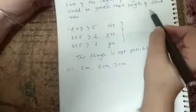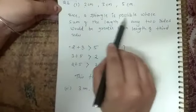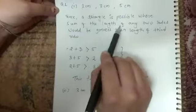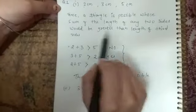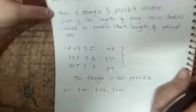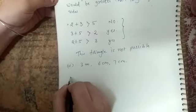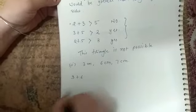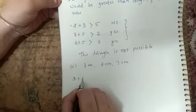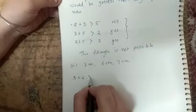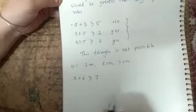Now again we are using the same property. A triangle is possible if sum of the length of any two sides would be greater than the third side. So here again we are taking two sides. First group: 3 plus 6, 3 plus 6, definitely 9. 9 is always greater than third side which is 7.